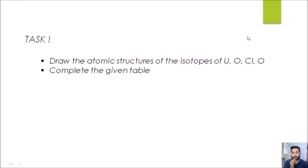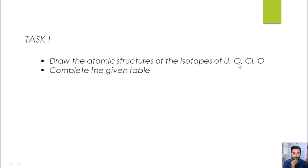Your task is to draw the atomic structures of the isotopes of uranium, oxygen, chlorine, and carbon. There are three isotopes of uranium, two isotopes of oxygen, two isotopes of chlorine, and two isotopes of carbon, which have already been provided in the video. You also need to copy down and complete the incomplete table. Meet you in the next lesson.